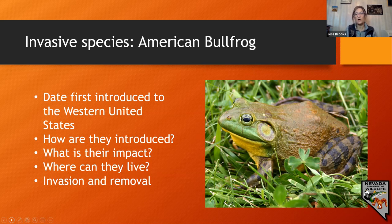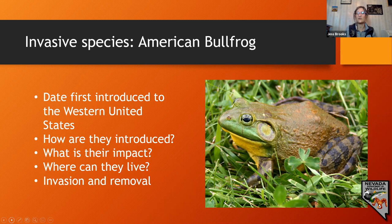Bullfrogs are especially fond of slow-moving open bodies of water. In the U.S., where water is scarce and where modifications like dams have altered natural water courses, bullfrogs have a prime opportunity to out-compete other species. Once bullfrogs have invaded a space they can be incredibly difficult to remove, partly due to the large number of eggs they lay — females can lay a clutch of about 20,000 eggs at one time.